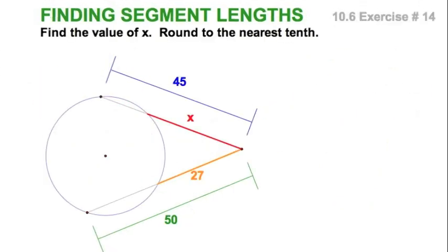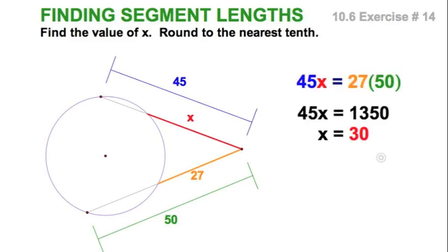Now, don't be fooled by this secant-secant problem. It's deceptively easy. Red times blue equals orange times green 2. Set it up. And, solve it. And, you're done. This segment is 30.